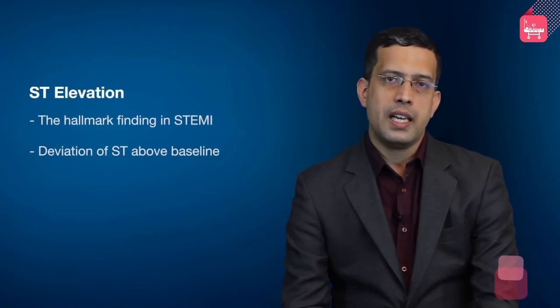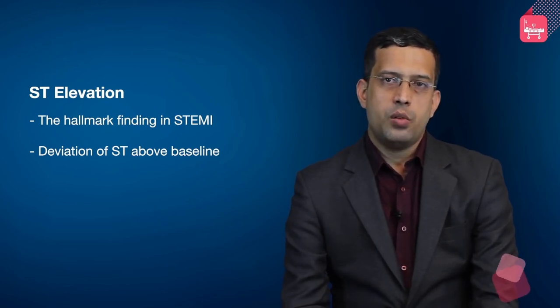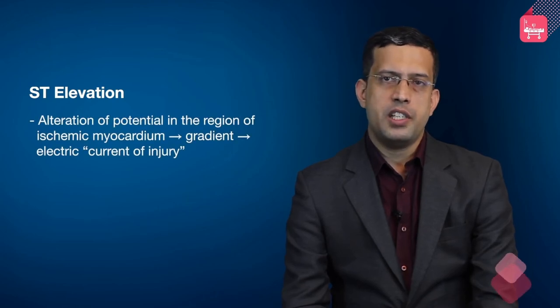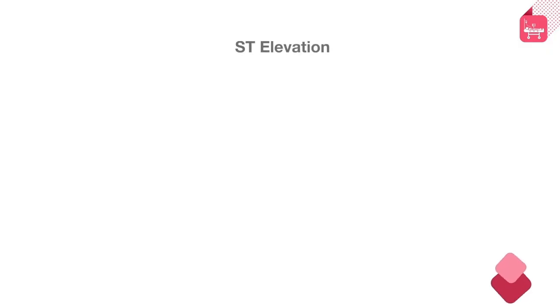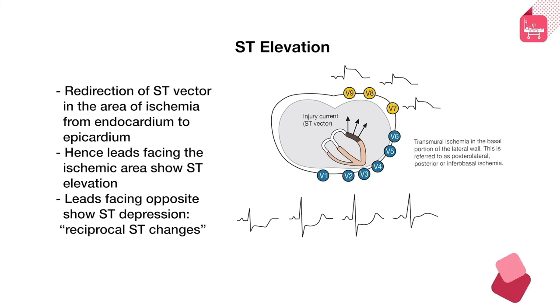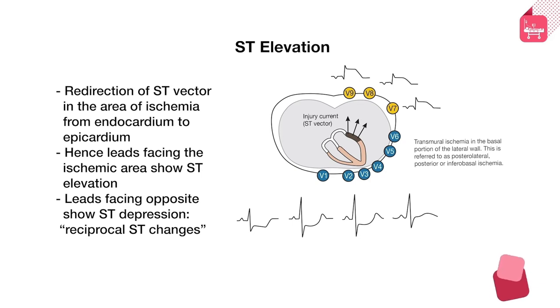ST elevation is the hallmark finding in ST elevation MI (STEMI). There is an alteration of electrical potential in the ischemic region creating an electrical gradient — the so-called current of injury — manifested as ST elevation on the surface ECG. This current of injury redirects the ST vector from the endocardium to the epicardium. Leads facing that region record activation coming toward them, causing ST elevation above the baseline.